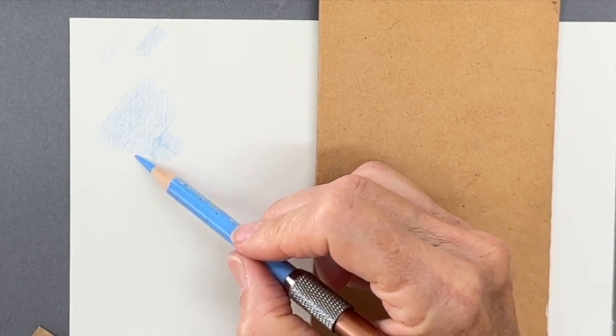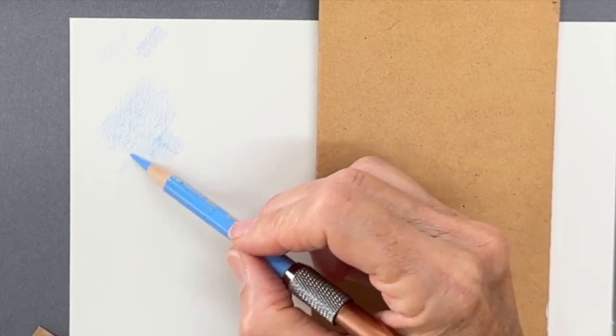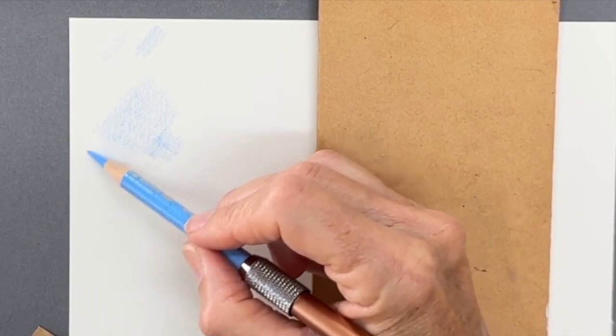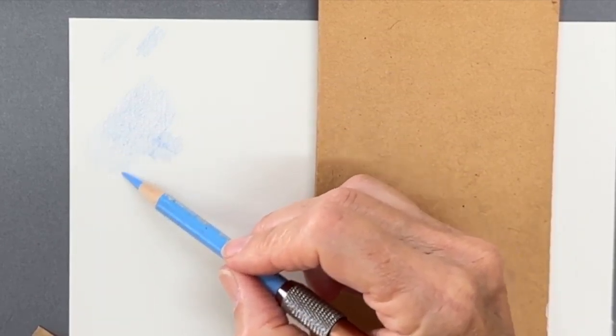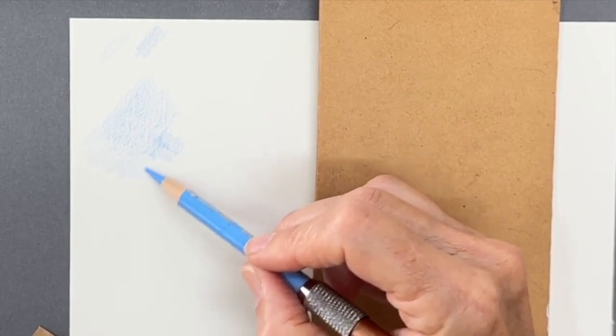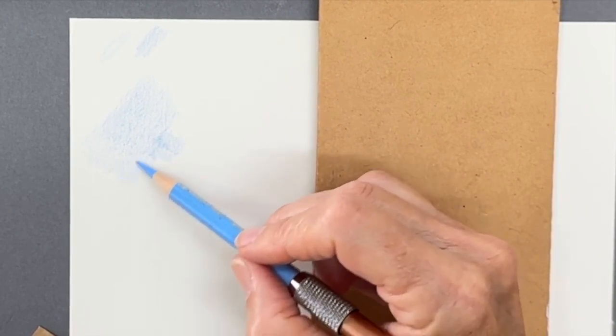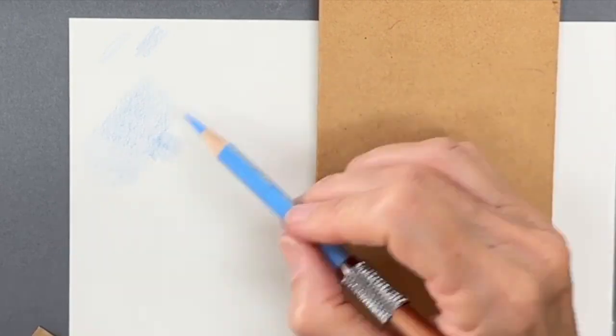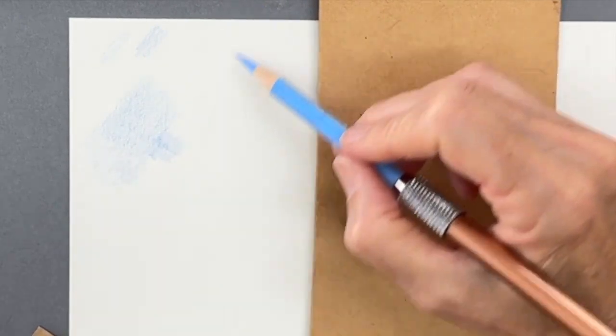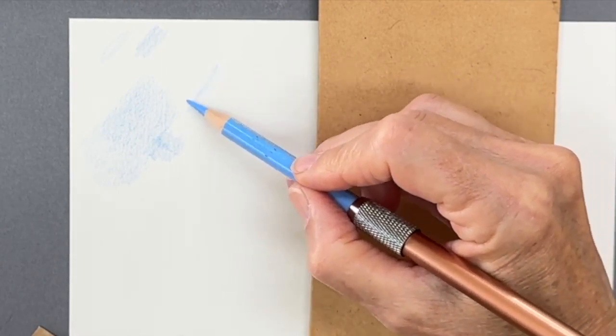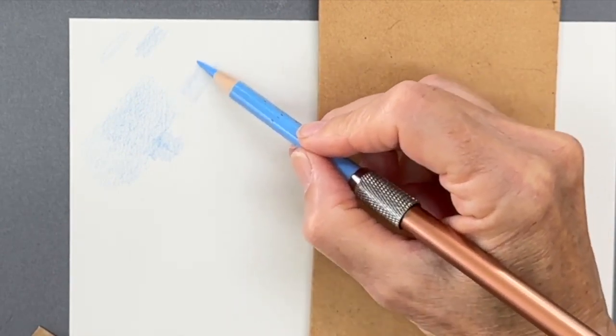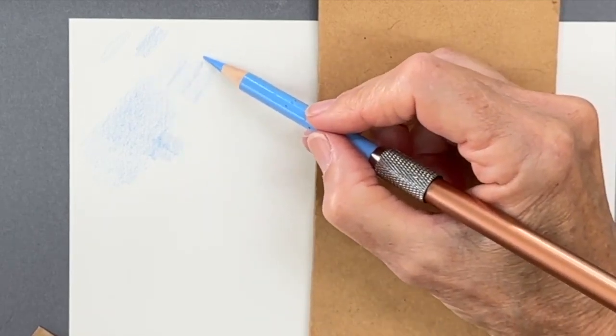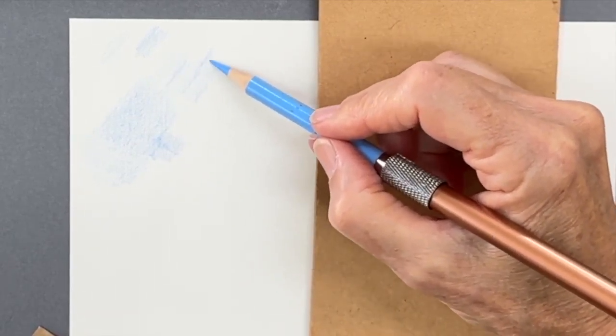It really is just a matter of practicing as much as possible, keeping your pressure even rather than going hard and soft. When you vary between hard and soft pressure, that's when you end up with inconsistencies, as well as your lines meeting.